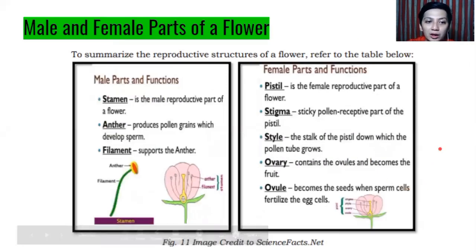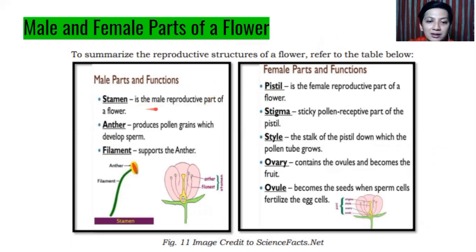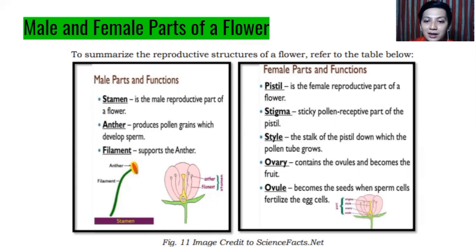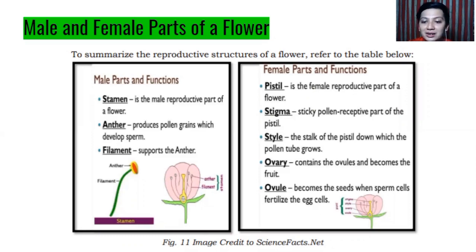Summarizing the male and female parts of a flower: the stamen is the male reproductive part. The anther produces pollen grains, which are the developed sperm. The filament supports the anther. The pistil is the female reproductive part. The stigma is the sticky, pollen-receptive part. The style is the stalk of the pistil, down which the pollen tube grows. The ovary contains the ovules and becomes the fruit, while the ovule becomes the seeds when sperm cells fertilize the egg.